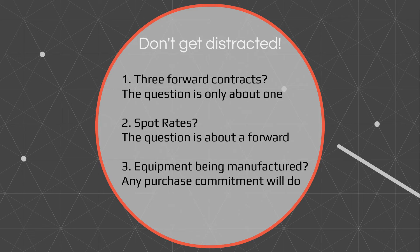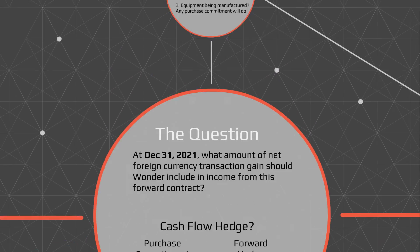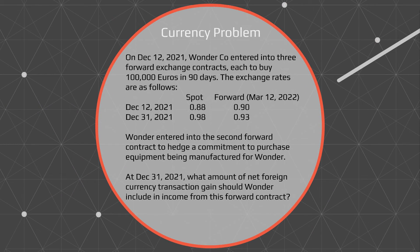They also give you information about the equipment being manufactured. Maybe they'll provide details about that, when any purchase commitment will qualify as a cash flow or fair value hedge. They provide all kinds of other information to distract you and cause you to make a mistake.